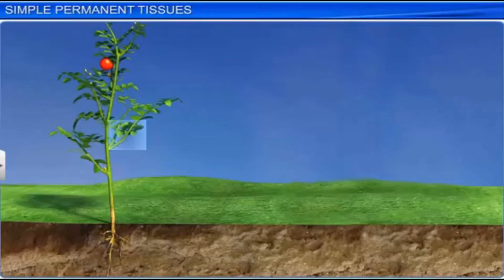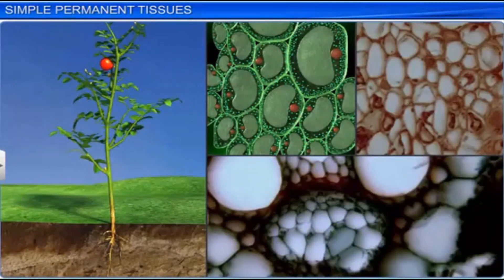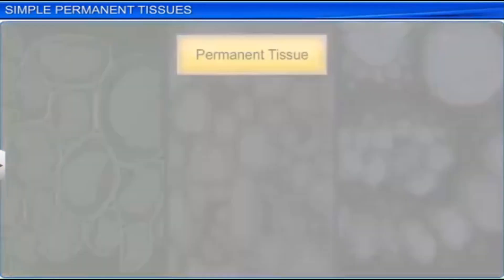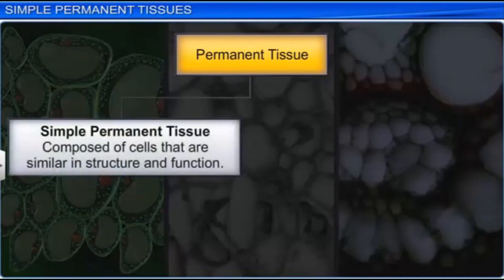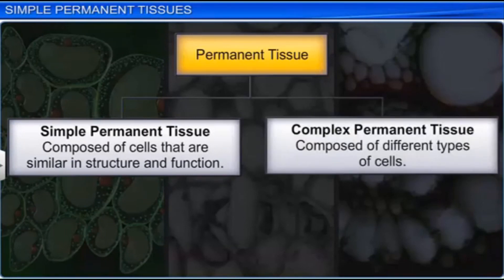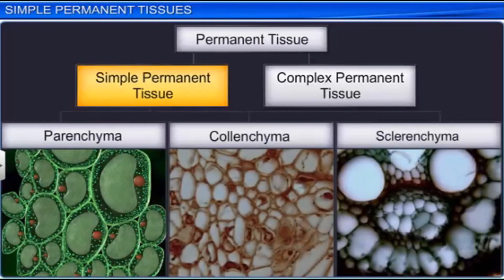Permanent plant tissue is a group of cells which are complete in growth and usually incapable of meristematic activity. Permanent tissue is of two types: simple permanent tissues, where all cells are similar in structure and function, and complex permanent tissues, which are composed of different types of cells. There are three types of simple permanent tissues: parenchyma, collenchyma, and sclerenchyma.